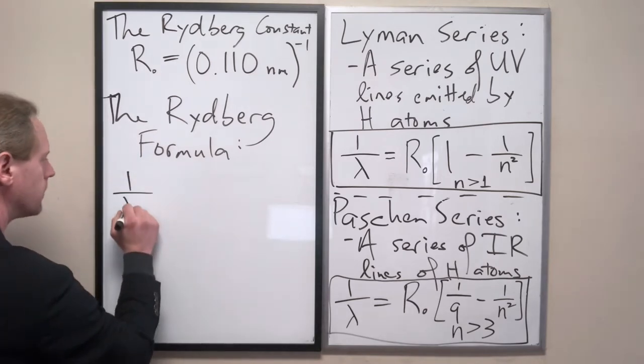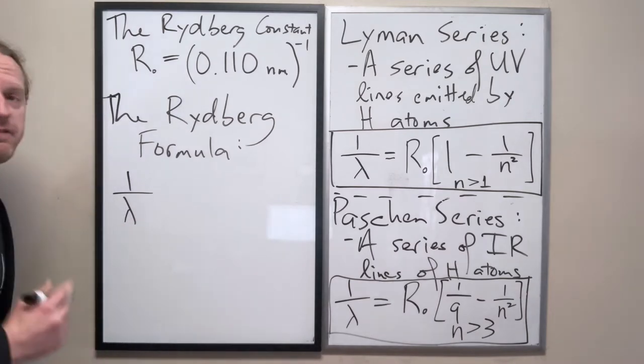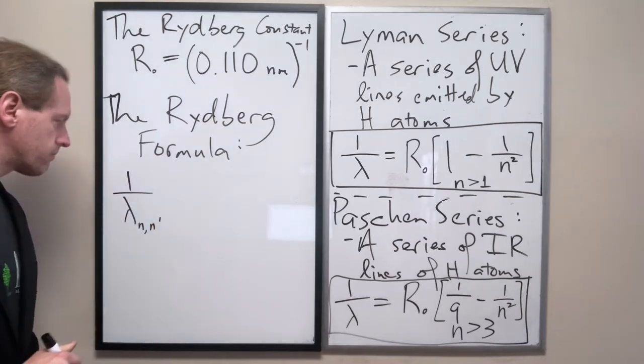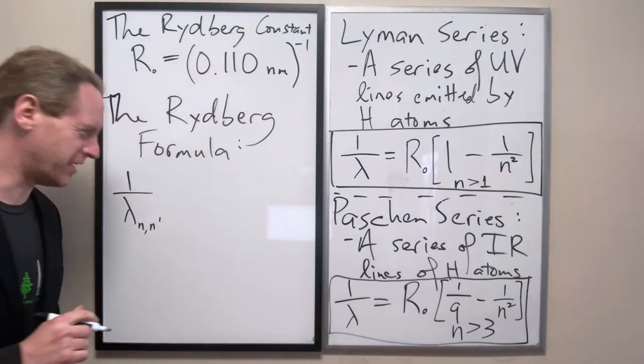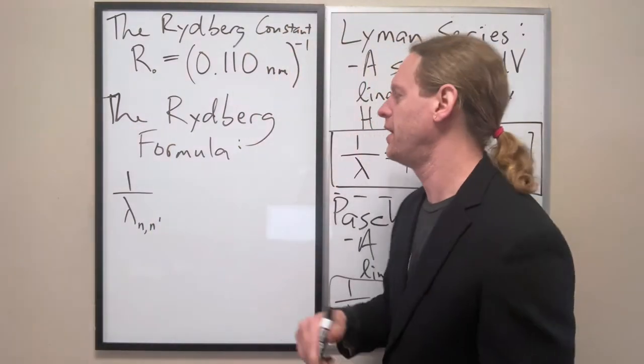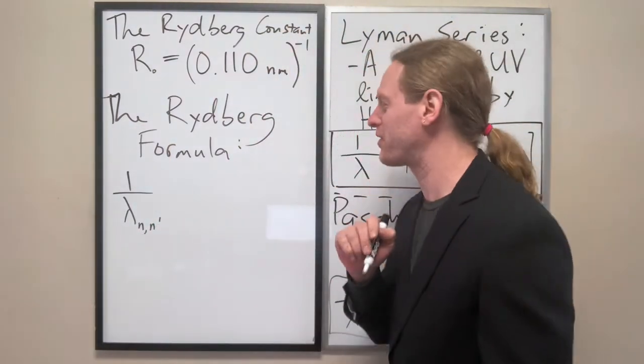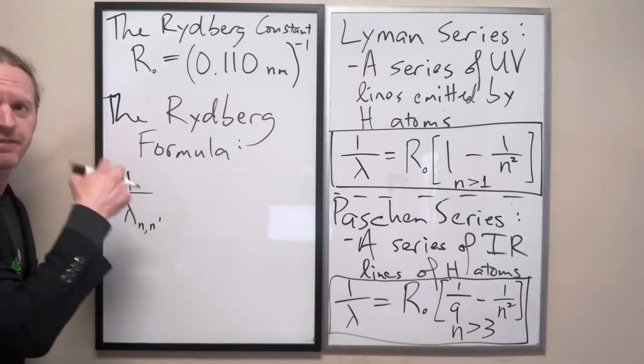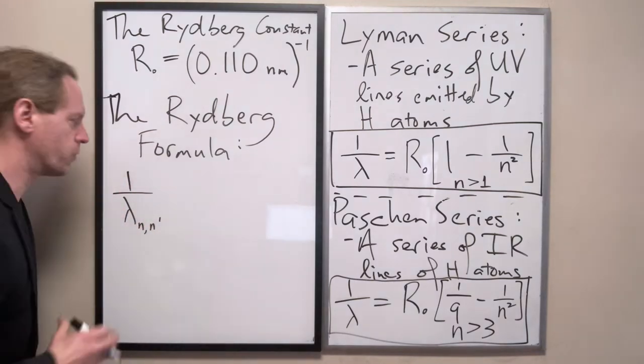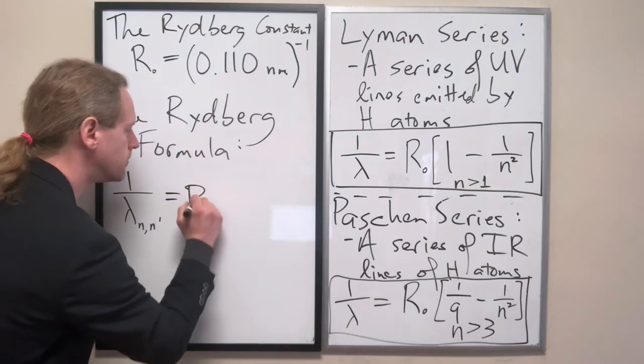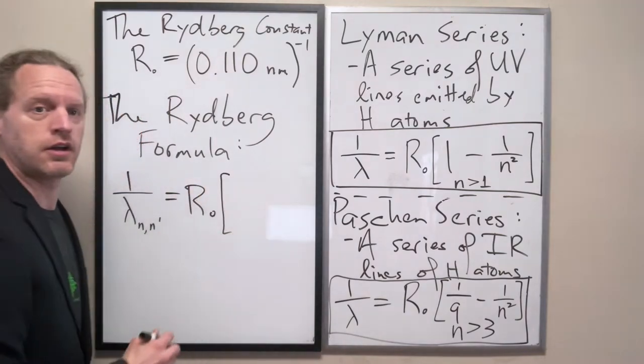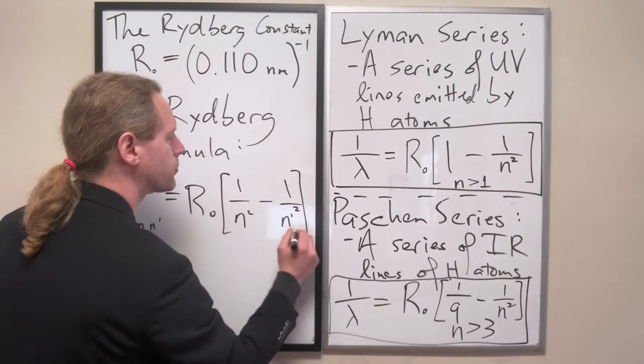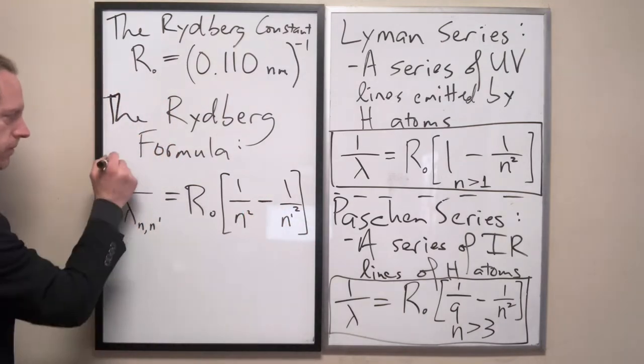One over lambda - and I'm going to put a few prefixes here - lambda n comma n prime. I don't like this notation but I'm going to use it and I will adjust this here shortly because for me I always forget which is which, but I'll make sure I do it right. So you have two separate varying indices - think of this as like i and j maybe, but we're going to leave it n and n prime - equals R naught times, and you can probably guess, minus 1 over n squared minus 1 over n prime squared, and that's it.